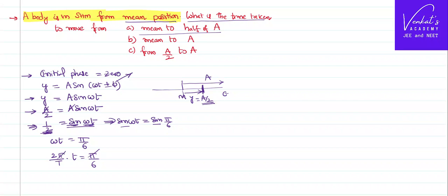So if you rearrange the terms, capital T is equal to T by 12. What do you mean by that? Time taken to move from mean position to this place, half the amplitude, is equal to 1 by 12th of the total time period. That is one part of the problem.